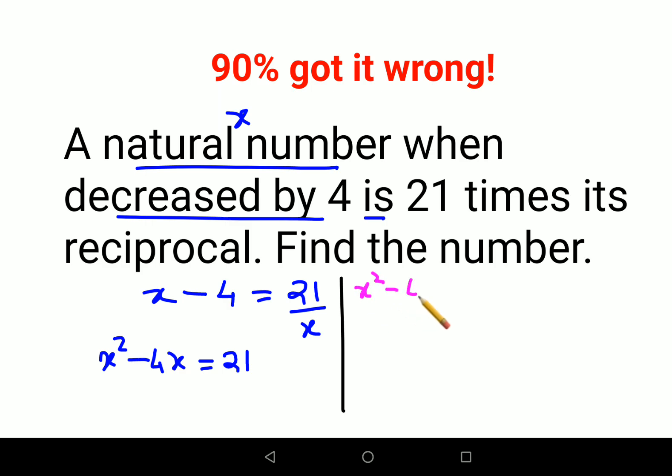So now we need to find the product of minus 21 in such a way that the sum or the difference comes out to be 4.